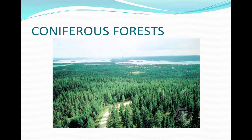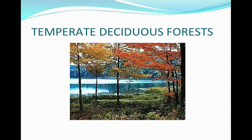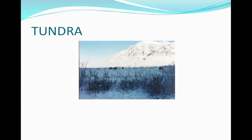Coniferous forests, or taiga, are in northern latitudes with average rainfall and are dominated by conifers; humans heavily log these areas. Temperate deciduous forests, or broadleaf forests, are in middle latitudes with higher precipitation and hot, humid summers; deciduous trees that lose their leaves in fall and winter dominate, and we live in this biome. The tundra is in Arctic zones with average precipitation and very cold temperatures, characterized by permafrost — ground that never thaws. Few people live in the tundra, but it is used for mineral and oil mining.